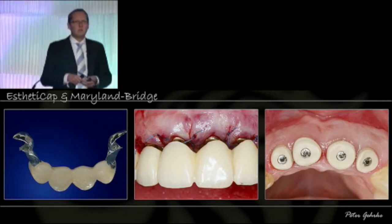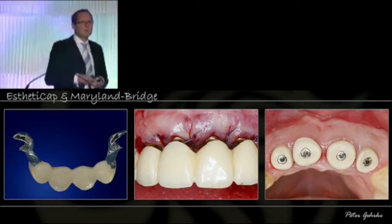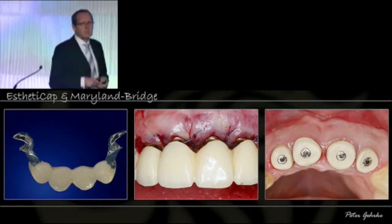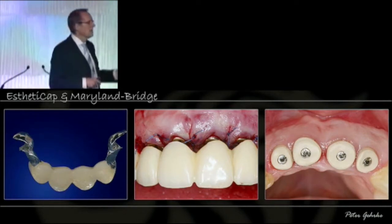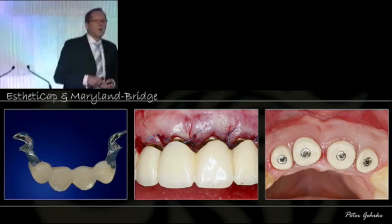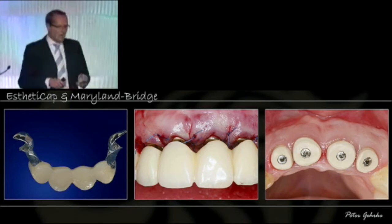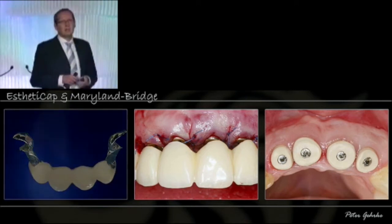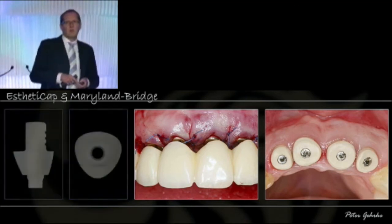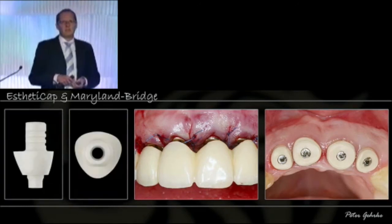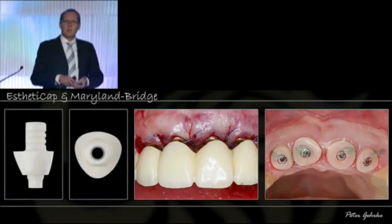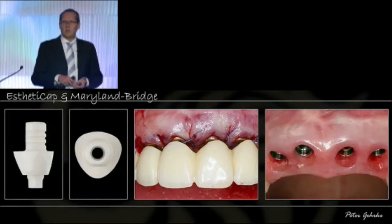We have used adhesively bonded bridges, like the Maryland concept, for waiting for osseointegration. This is one example of provisional restoration, and that's where we start with implant abutments — with acrylic.